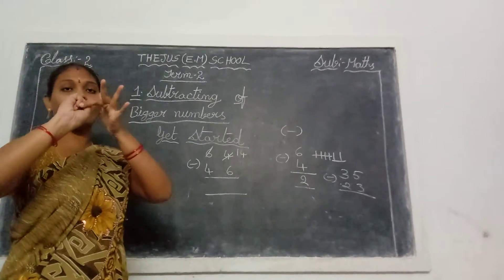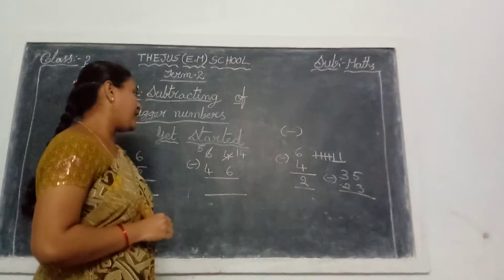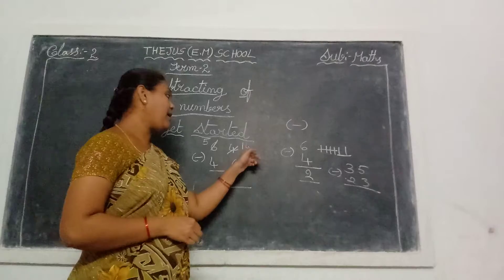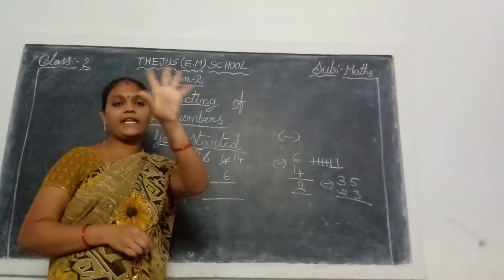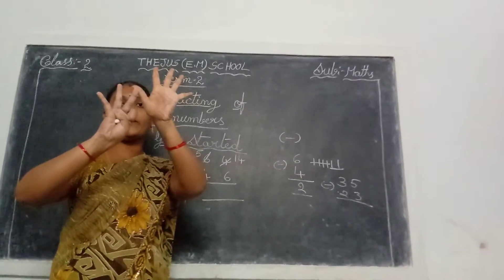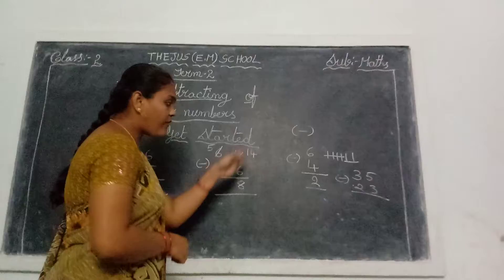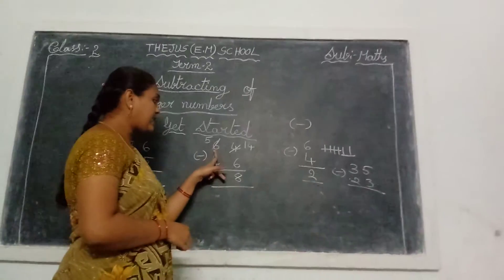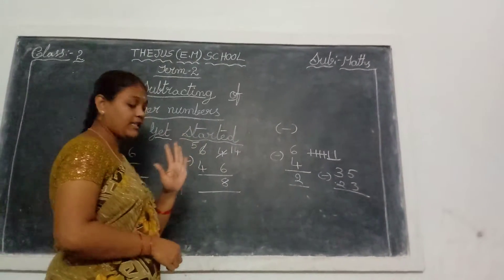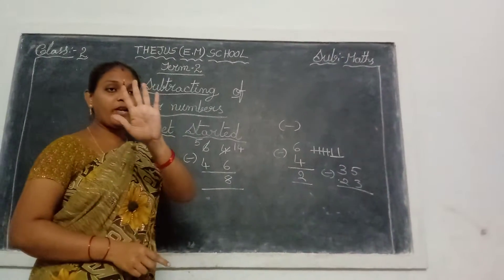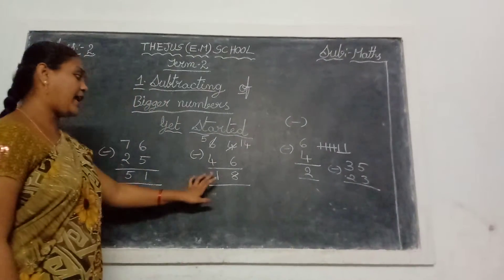6 gives 1 number borrowing. So 1 finger is closed — remaining 5. Write that 5 in the tens place. Now 4 becomes 14. Count up from 6: 7, 8, 9, 10, 11, 12, 13, 14 — 8 fingers are open. So write 8 here. Now the ones place is complete. For the tens place: 6 already gave 1 number borrowing, so remaining 5. Take 5 fingers, close 4 fingers — remaining 1 finger. So the answer is 18.